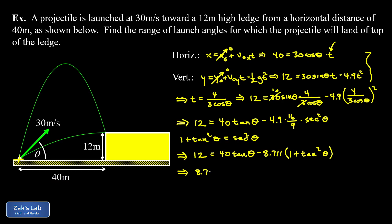So I end up with 8.711tan²(θ) on the left hand side. All I did there was distribute that -8.711 and then add that quadratic tangent term to both sides. My linear term on the left hand side will become -40tan(θ).